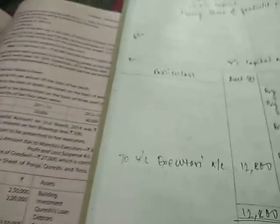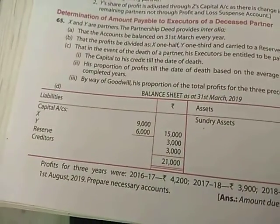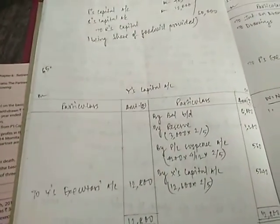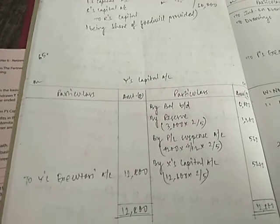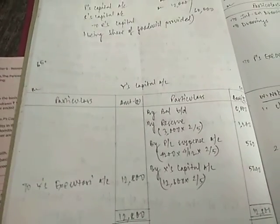Now here you can see the capital balance in the question was given 6,000 for Y. There was a reserve of 3,000. So the balance biddy of Y's capital account. You just need to prepare a Y's capital account here. We will not prepare the partner's capital, we will just prepare Y's capital. So there will be a single column for amount.